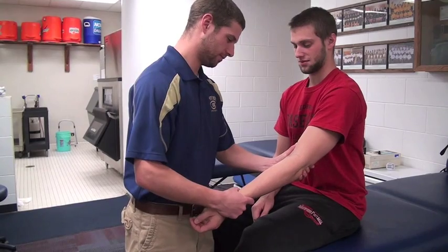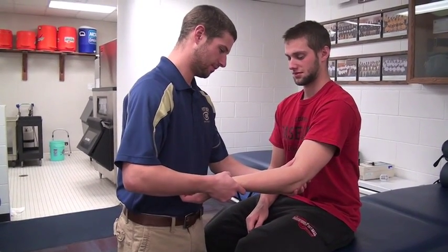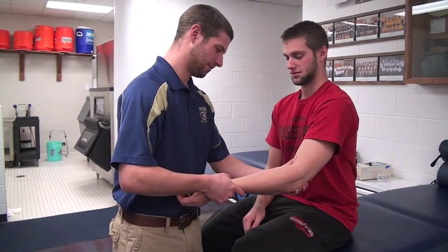One hand supports the medial elbow with the fingers reaching behind the joint to palpate the lateral joint line. The opposite hand grasps the distal forearm.